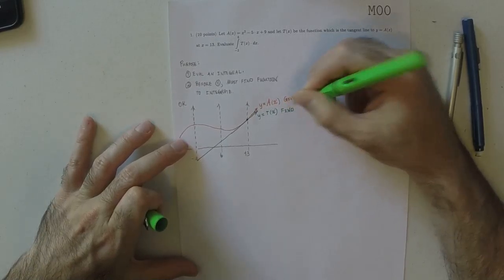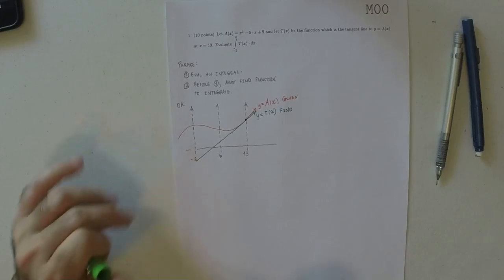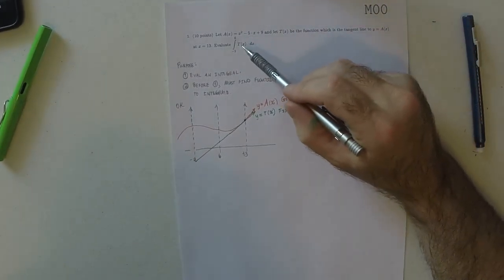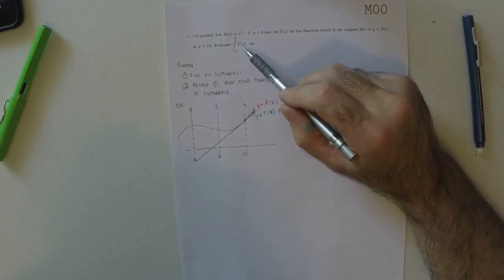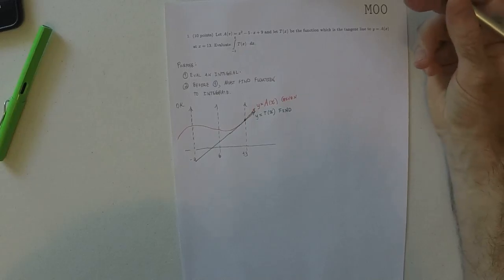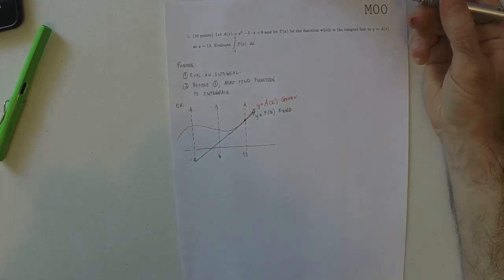So many students, the error that they made was instead of finding T and integrating that, they just integrated A. And then you didn't get any credit if that's what you did.